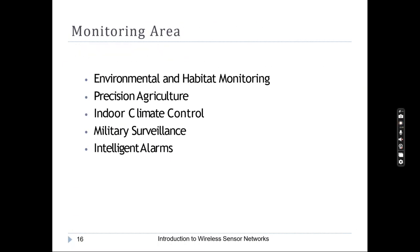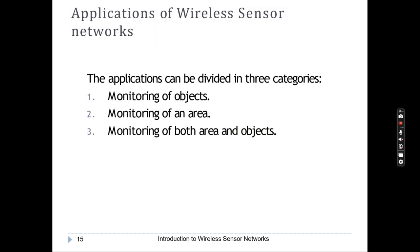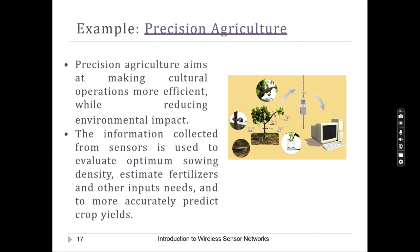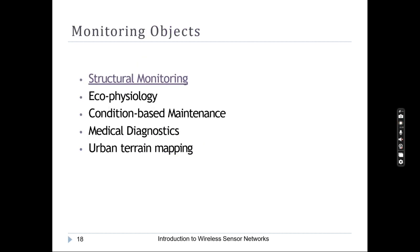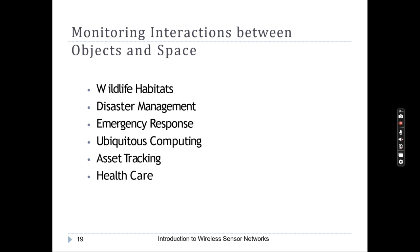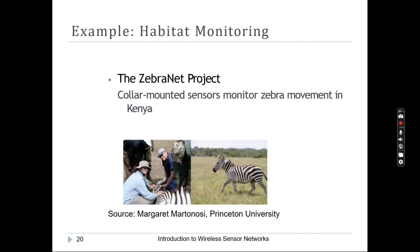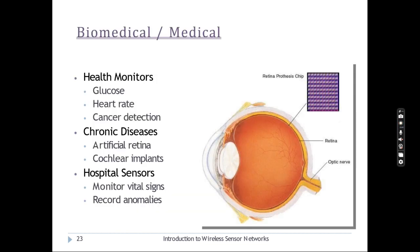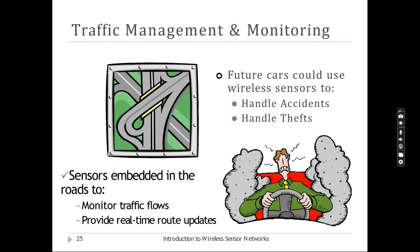In this session we discussed the applications of wireless sensor networks and the various categories. Generally applications are classified into three: monitoring of objects, monitoring of an area, and monitoring of both. We discussed precision agriculture, structural monitoring, wildlife habitat monitoring, disaster management, the Pentagon building sensors, biomedical markers, and traffic management and monitoring.